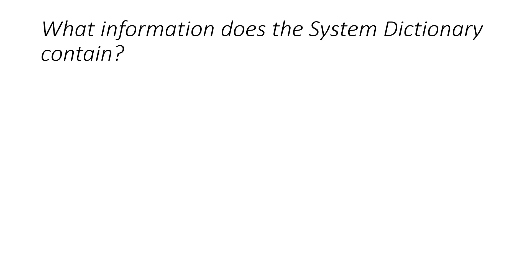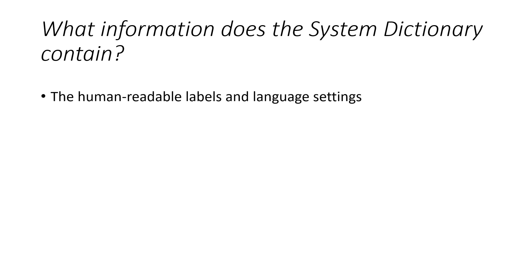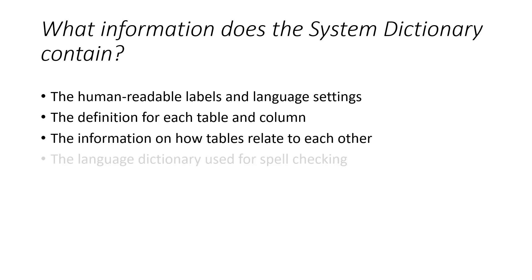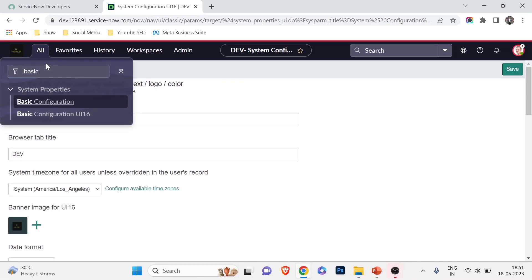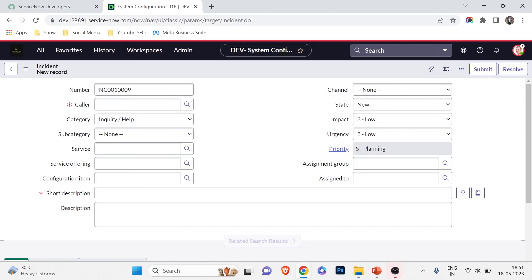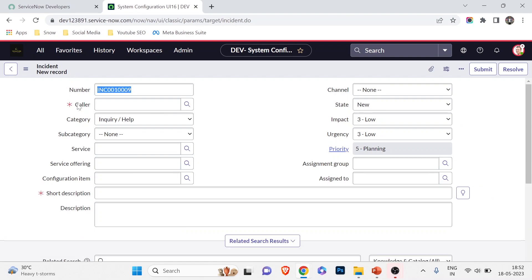Question three: what information does the system dictionary contain? I have explained this in my table and column videos on the channel. If I go to any form — I'm in the Incident form right now — and right-click on any column, you can see the 'Configure Dictionary' option.